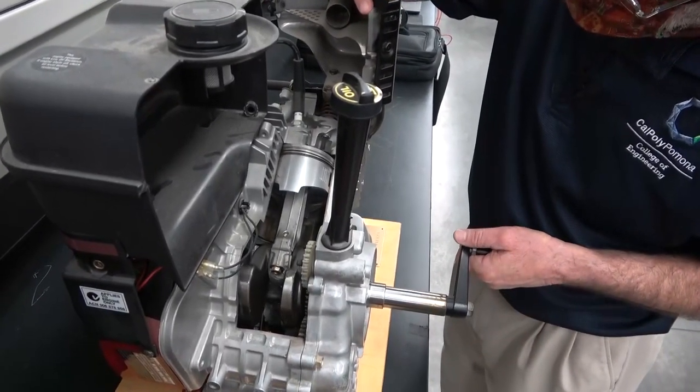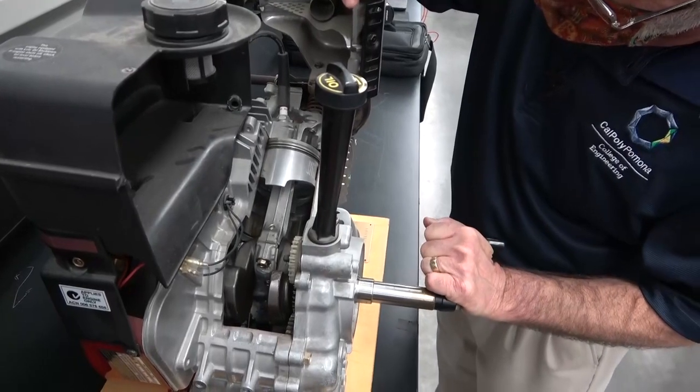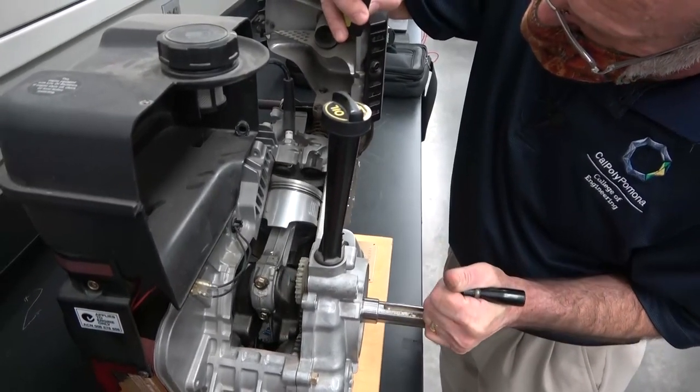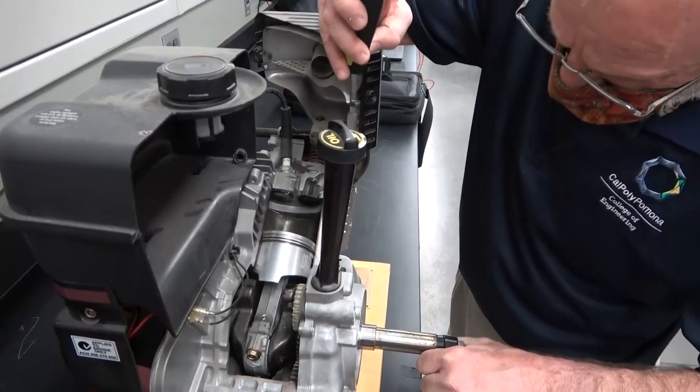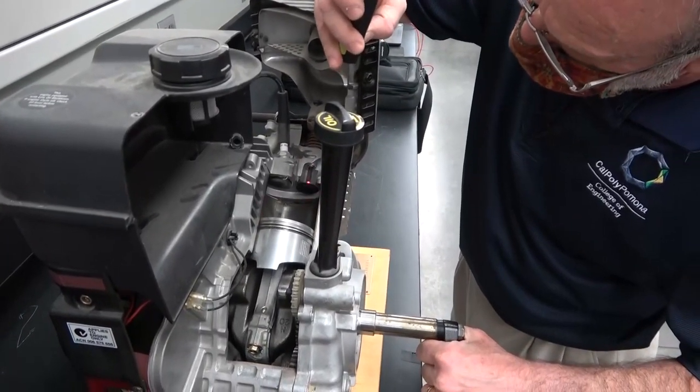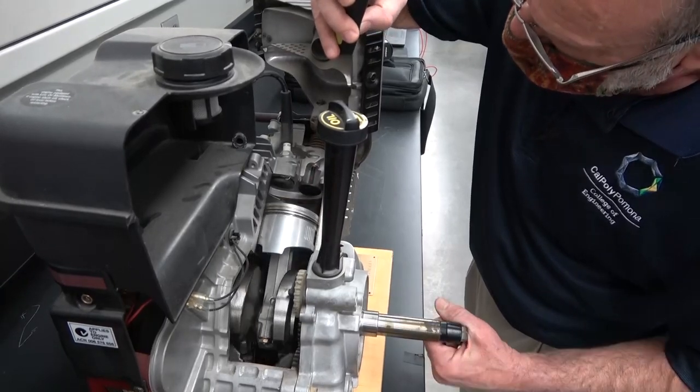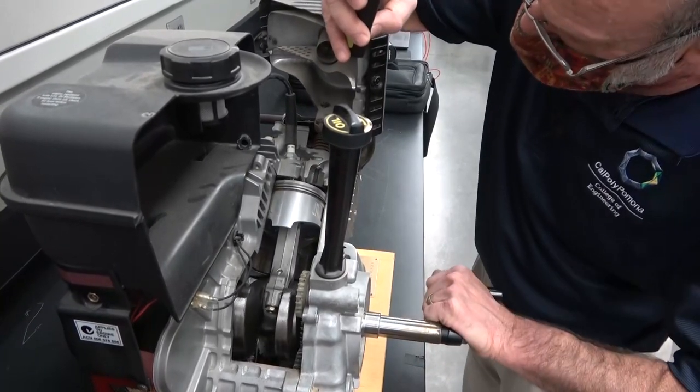Both intake and exhaust are closed. Combustion occurs at top center, pushes the piston down—there's the power stroke—and then last but not least we have the exhaust stroke. Now you see the exhaust valve is opening and we exhaust from the engine.